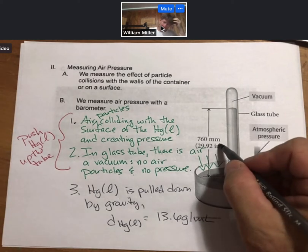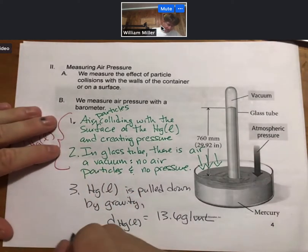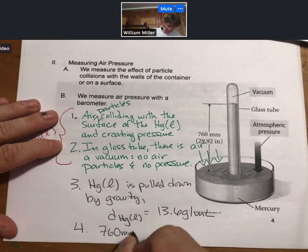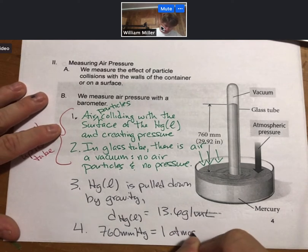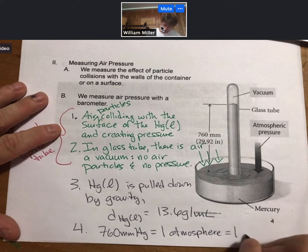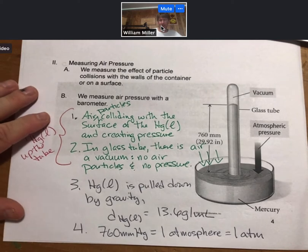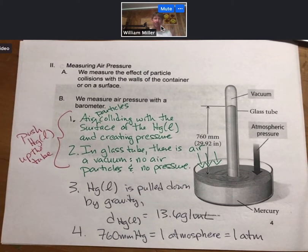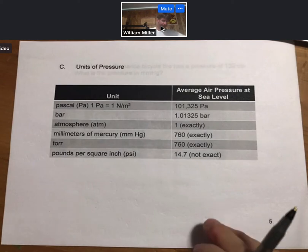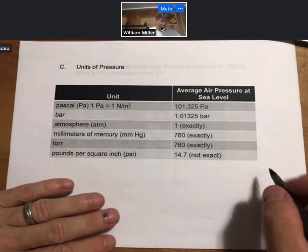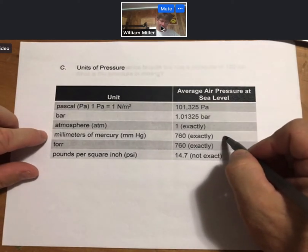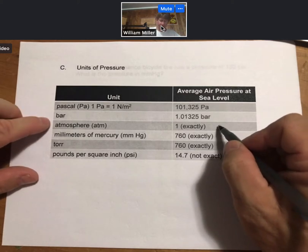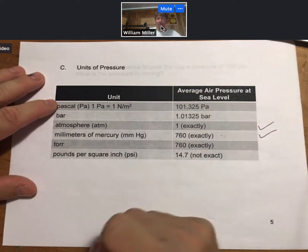And this 760 millimeters of mercury is equal to what's called one atmosphere, which is abbreviated ATM for atmosphere. And that is the atmospheric pressure at sea level, and it is a definition. Now, as far as units of pressure, we can see the atmosphere here, and it is exactly equal to 760 millimeters of mercury. Millimeters of mercury and atmospheres tend to be the two most common units of pressure that I use in my class.